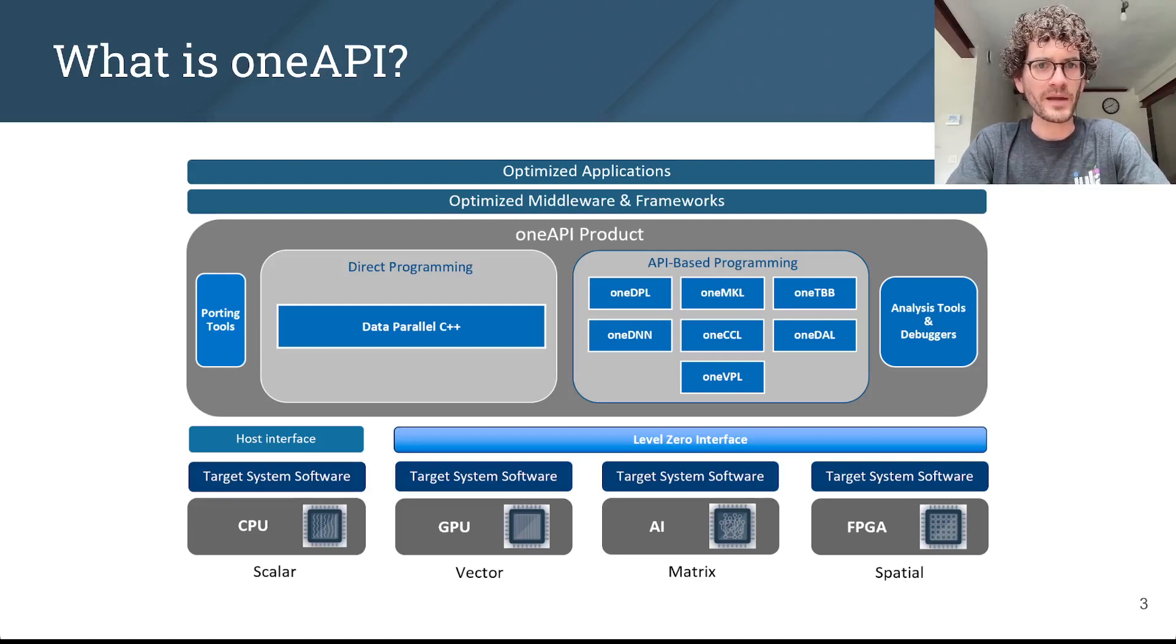The programming framework consists of different pieces. There's a C++-based frontend language called Data Parallel C++. There's many libraries with optimized functionality, like oneMKL and oneDNN. There's a bunch of tools, debuggers, profilers, and so on. And finally, most of that sits on top of the level zero libraries, which provide low-level access to the hardware.